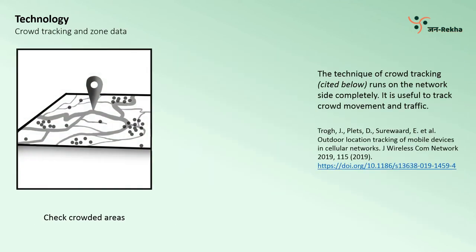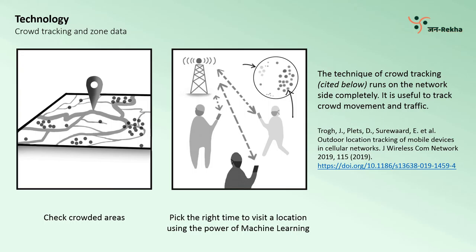For crowd tracking, a novel technique to track movement of masses is used. This technique is explained in depth in a research paper published in 2019 in the Springer journal — link to the paper is in the description. This technique does not require any change in both the network and the mobile site, and is useful to track large movements of crowds. A machine learning model can be trained to find the best times to visit a location when the crowd is less, helping the user to plan their trips accordingly.